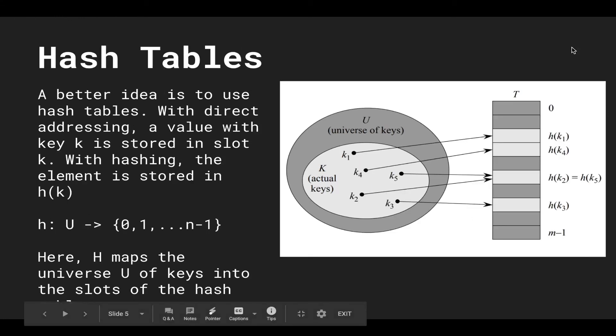So a better solution is a data structure called hash tables. With direct addressing a value with key k is stored in the slot k but with hashing the element is stored at the bucket with the index h of k. So h is our hashing function and this hashes keys in our universe to specific indices of our table. So let's say I wanted to insert k1. I'm not going to find the bucket in the table with the address k1.